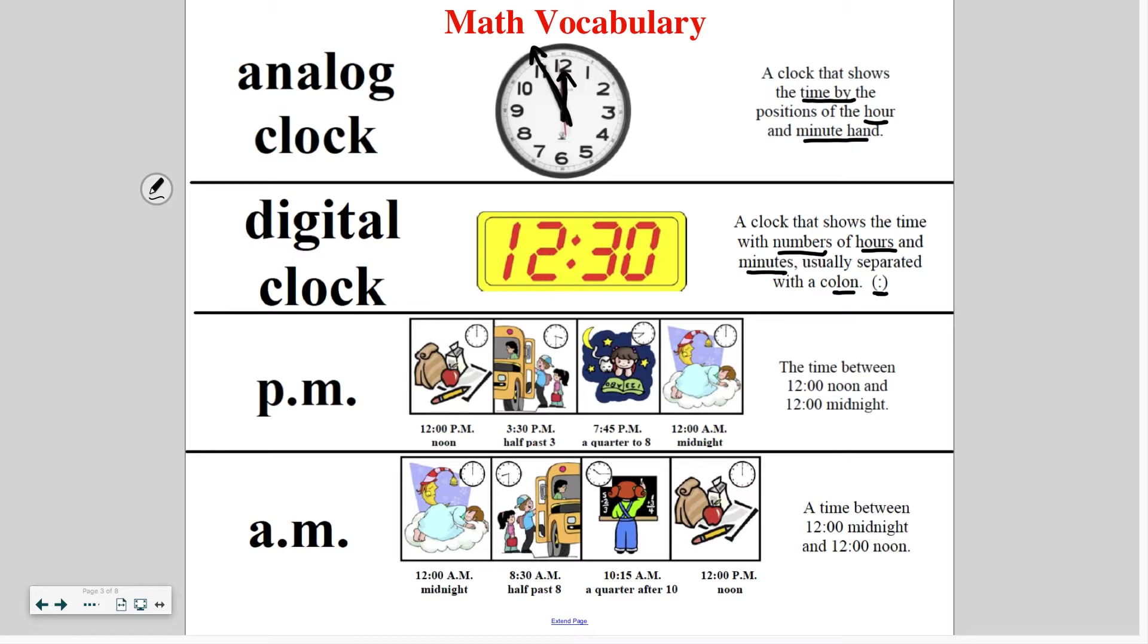Something we also use to help us tell the exact time is adding the letters PM and AM after the time, especially when writing the time. So for example, at 12 PM or 12 noon, most people are eating lunch. At 3:30 PM or a half past three, most people are on their way home from school or work. By 7:45 PM or a quarter to eight o'clock, people are getting ready for bed usually. And by 12 AM or 12 midnight, people are sleeping. When we look at AM, back to midnight, 12 AM or midnight, we're sleeping. 8:30 AM or half past eight o'clock, people are on their way to work or school. By 10:15 AM or a quarter after 10, people are usually at work or school. And back to 12 noon, 12 PM, it is lunchtime again.